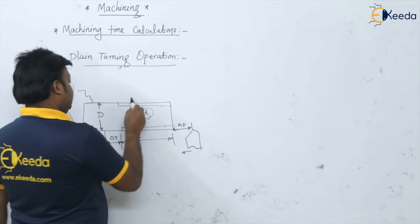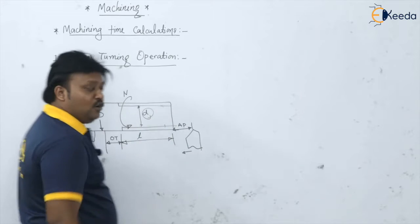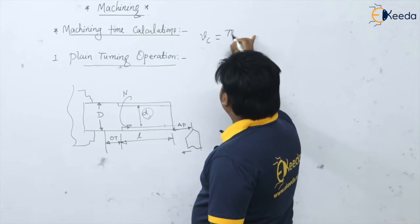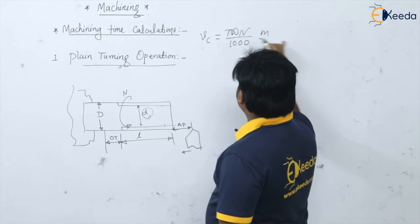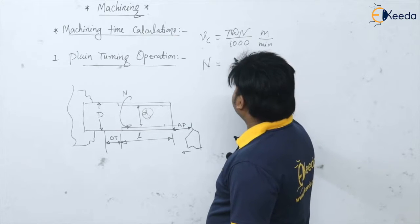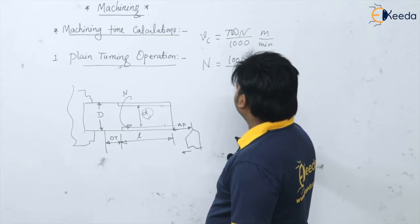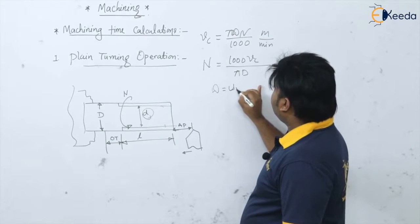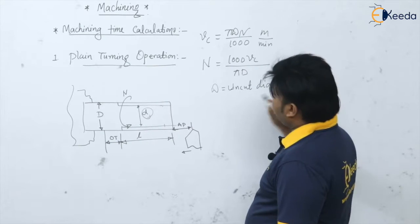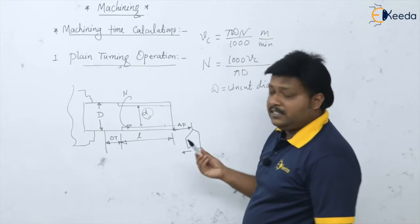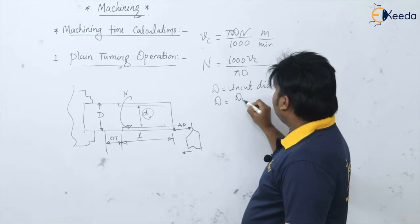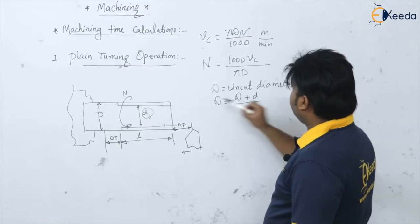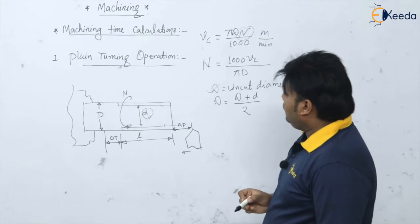For the speed calculation of this job, you can use the uncut diameter. The cutting velocity is pi*D*N divided by 1000, which is in meters per minute. When you calculate N, it equals 1000 times V divided by pi*D, where D should be the uncut (original) diameter. Alternatively, if the diameter after the first cut is given, you can take the average: (D_original + D_after_cut) / 2. Generally, use the uncut diameter for speed calculation.